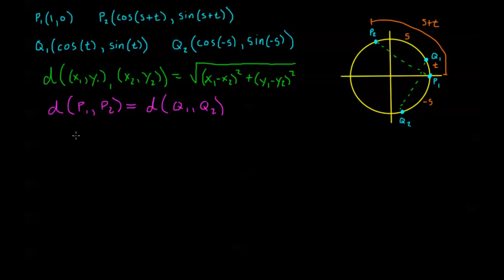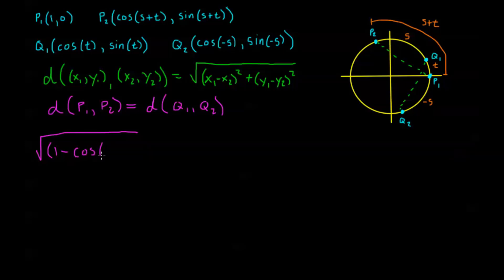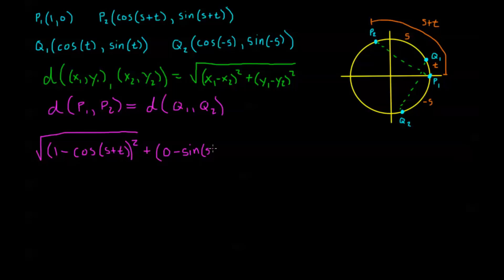Both line segments are equal since they subtend arcs of equal length. Applying the distance formula to p1 and p2: p1 is the point (1, 0), and p2 is the point (cosine(s+t), sine(s+t)). So the distance is the square root of (1 minus cosine(s+t)) squared plus (0 minus sine(s+t)) squared.